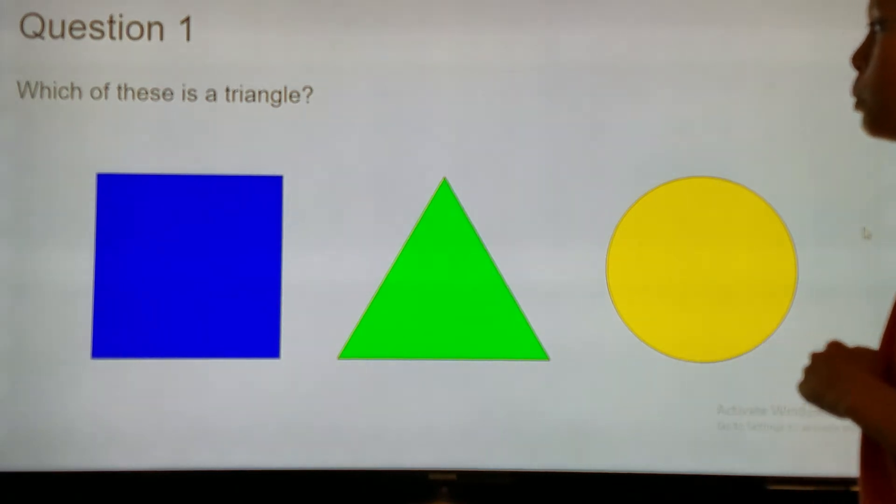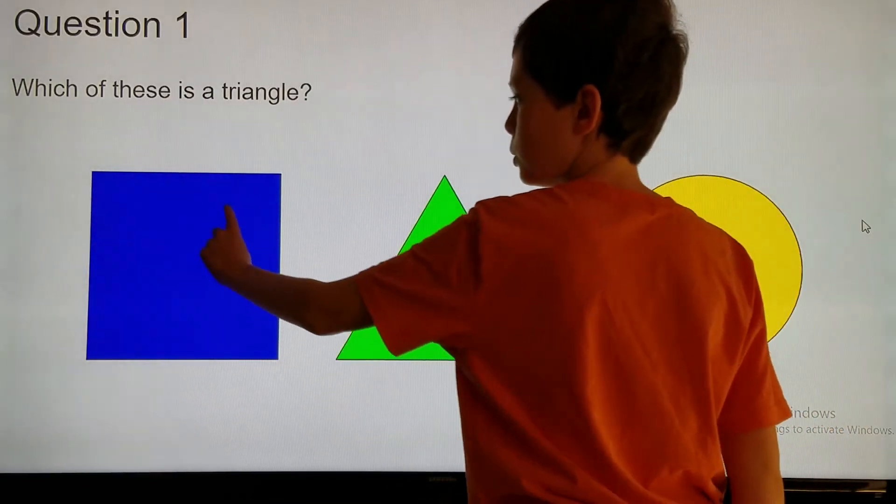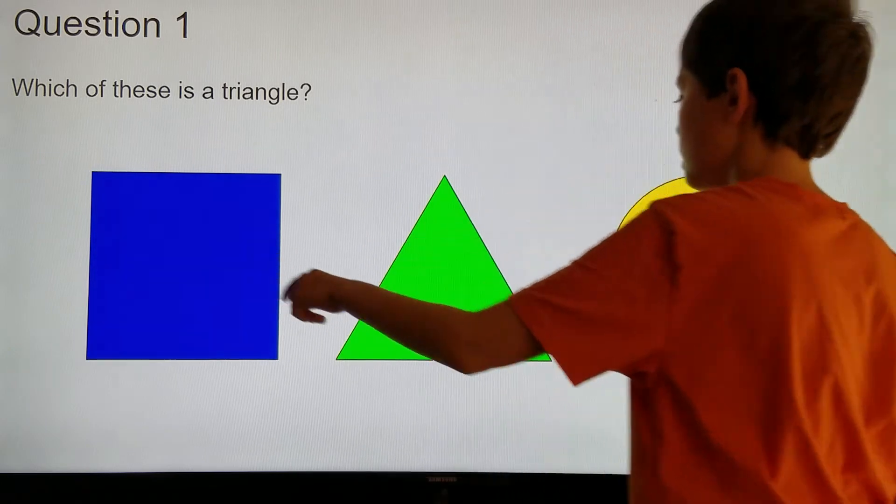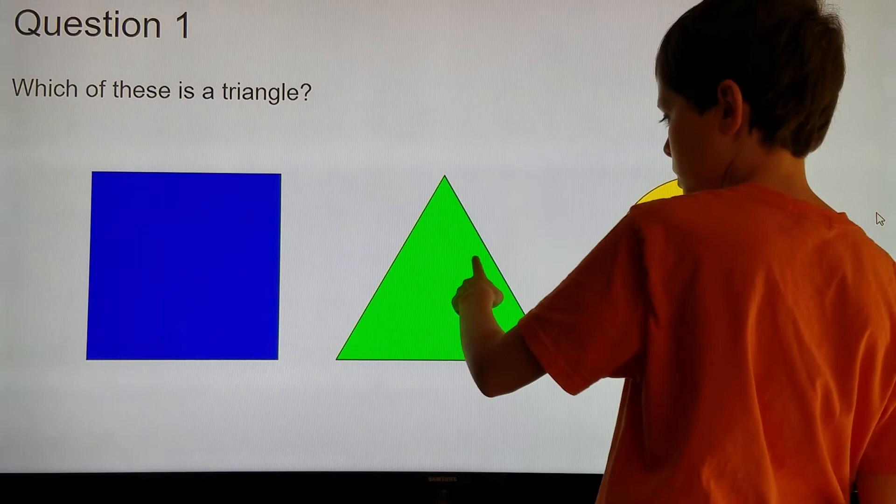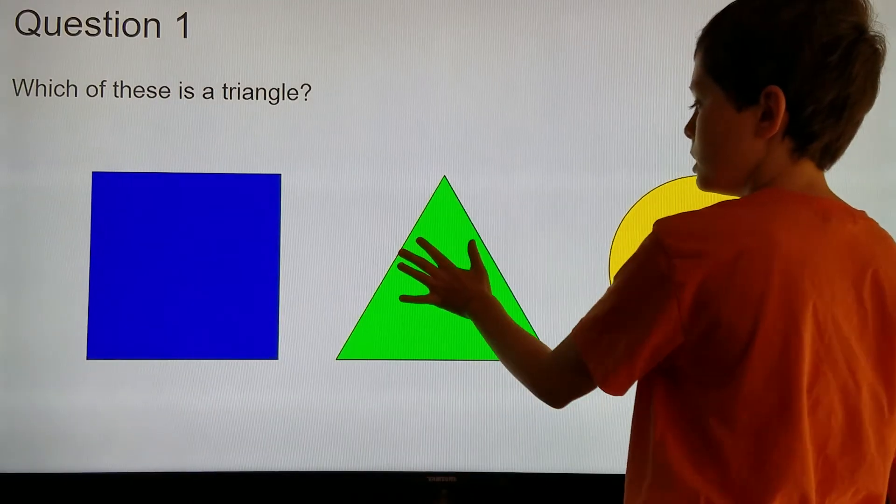Question one, which of these is a triangle? Well, this one has four sides, this one has no sides, and this one has one, two, three sides. So, this is a triangle.